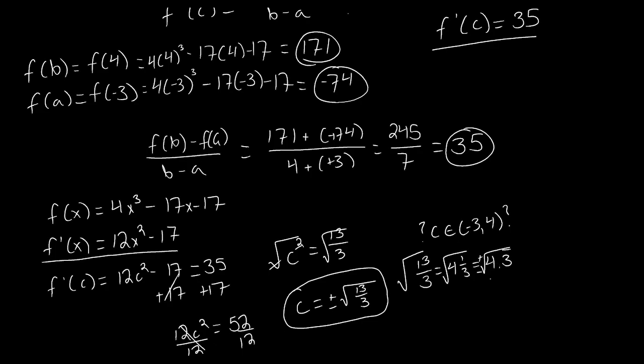But in either case, since this is a little larger than positive 2 or a little less than negative 2, we see that plus or minus root 13 over 3 both fit inside of our open interval. So both c equals positive root 13 over 3 and c equals negative root 13 over 3 will satisfy the mean value theorem for our function on our given interval.